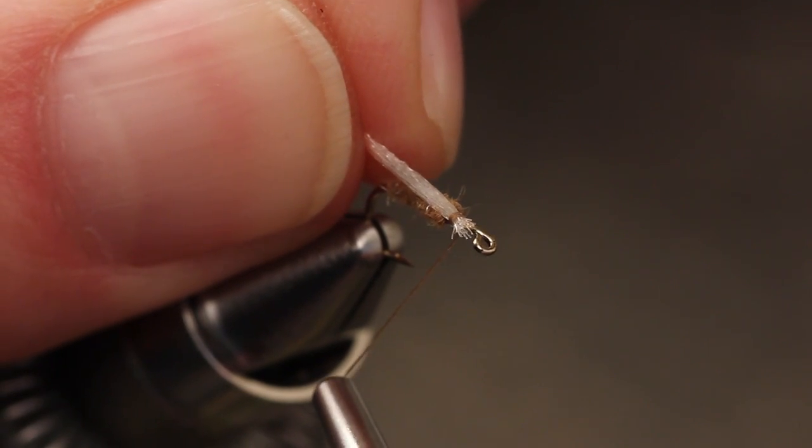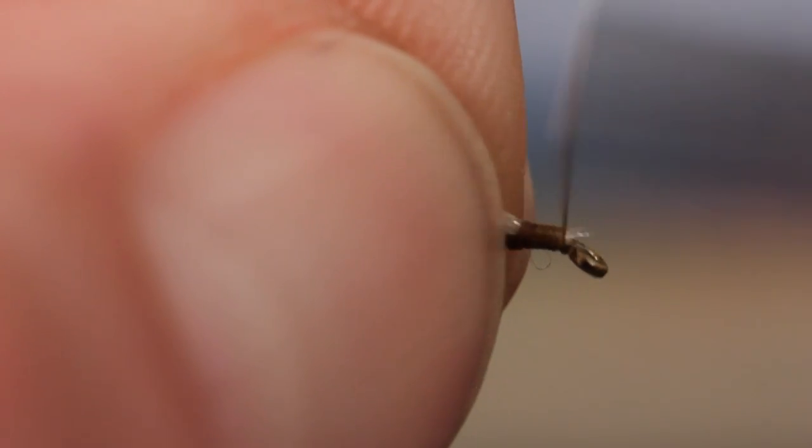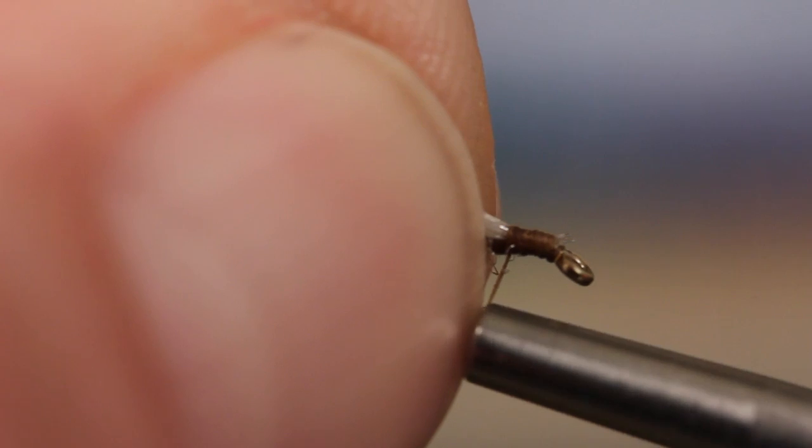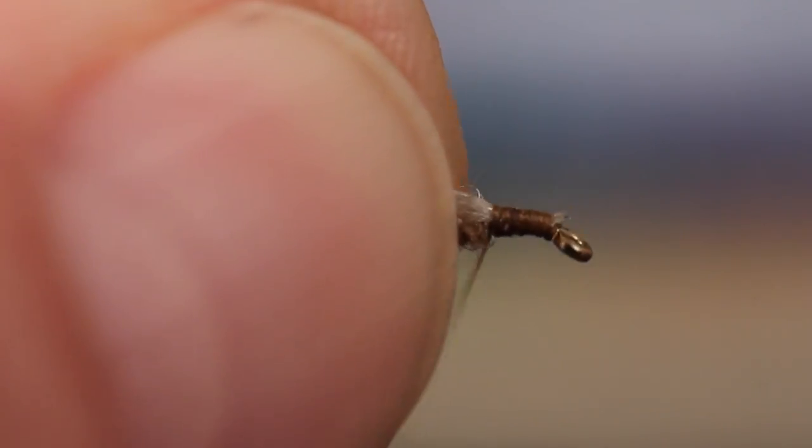Pulling rearward on the Zeylon, shorten the butt ends so they don't need to be snipped off. Now take wraps of tying thread to cover the butts from behind the eye all the way back to the abdomen.